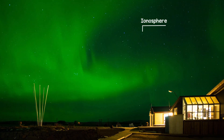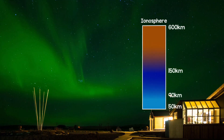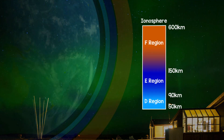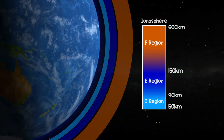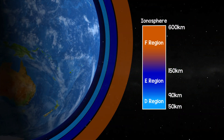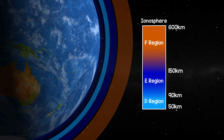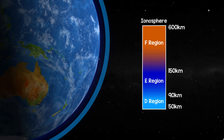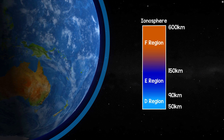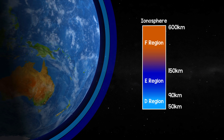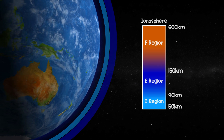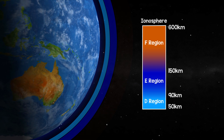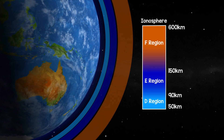The ionosphere has historically been divided into regions D, E and F, with the term layer referring to the ionisation within a region. The lowest is the D region between 50 and 90 kilometres in altitude. Next is the E region between 90 and 150 kilometres, and the F region is the ionosphere above the E region.